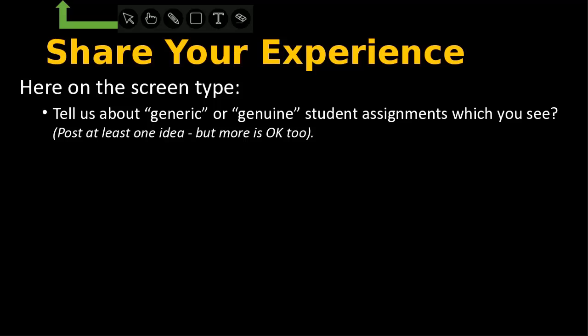If you've never used the Blackboard write-on-screen tool, you're going to look for and click on the little T, then choose whatever color from the color wheel — the default is blue — and then click anywhere on the screen and start typing. When you're done, click out and it will show up.